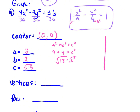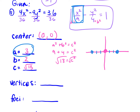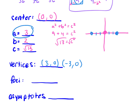Now let's figure out our vertices. Our center is at 0, 0 and our vertices are a spaces away. Since we start with x squared, we're going horizontally — right and left 3 spaces. Our two vertices are at 3, 0 and negative 3, 0. Our foci are c spaces from the center, so right and left square root 13. Our foci are at square root 13, 0 and negative square root 13, 0.